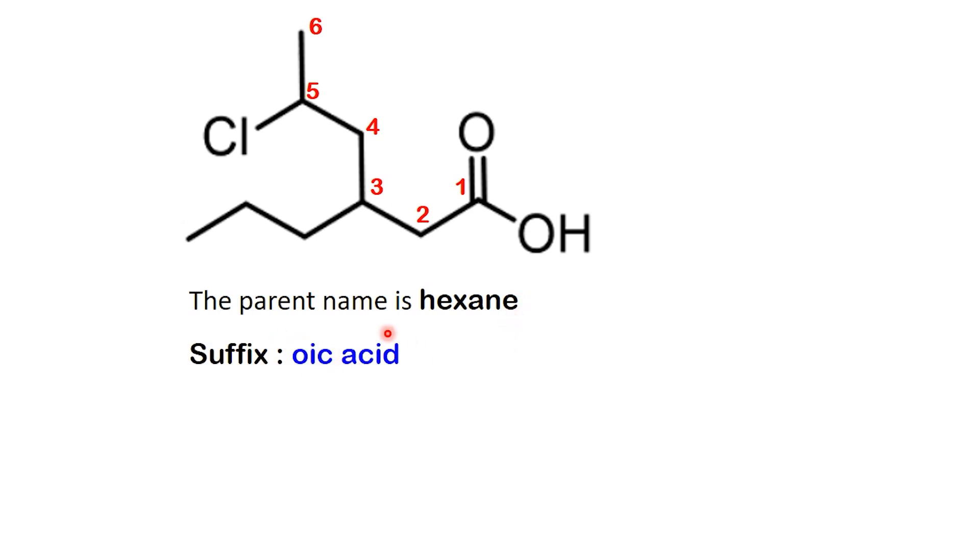Changing the ending, it becomes hexanoic acid. Now let's examine the branches. On carbon 3, there's a propyl group. On carbon 5, we see a chlorine atom attached, which gives us a chloro substituent.